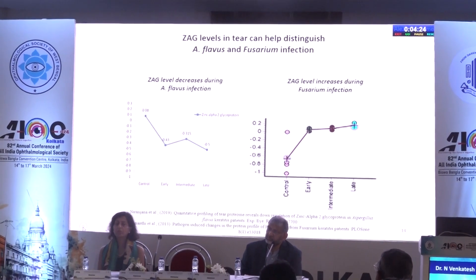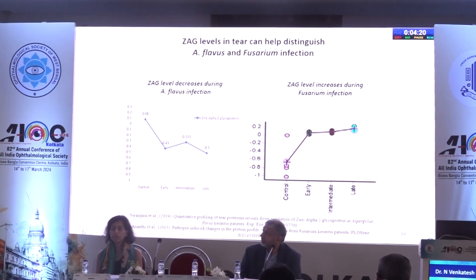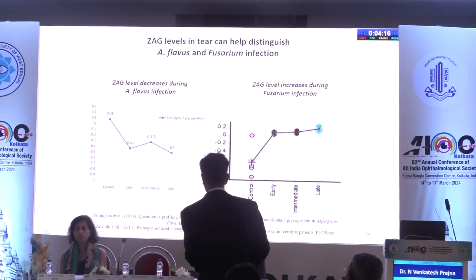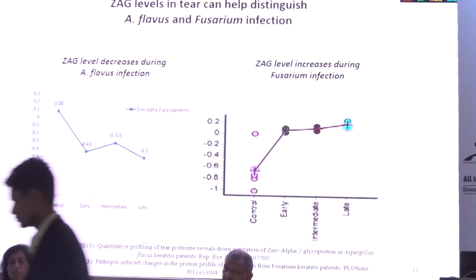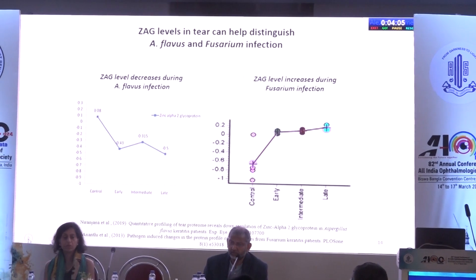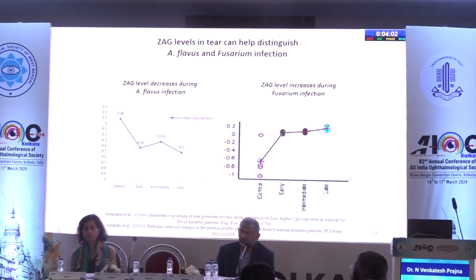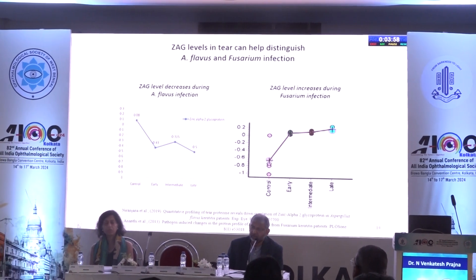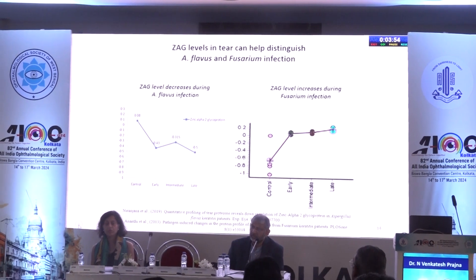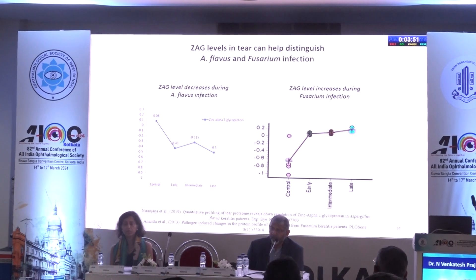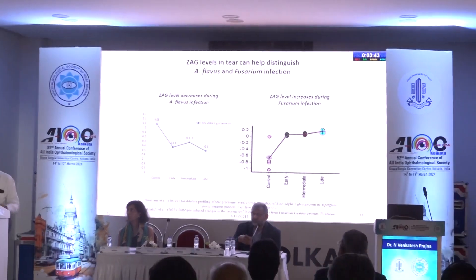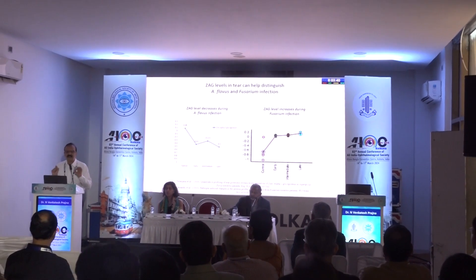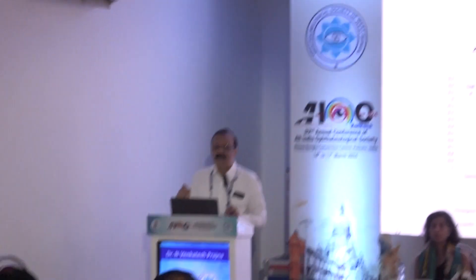We have multiple variations between Aspergillus and Fusarium, within Aspergillus, and within Fusarium. As for the host response, this is work we published in 2019: zinc alpha glycoprotein (ZAG), an immune marker measured from tears, shows a difference in response between an Aspergillus flavus infection and a Fusarium infection. To be frank, it doesn't work as a simple marker, but the fundamental point is there is a difference in immune response to Fusarium versus Aspergillus at the tear protein level.